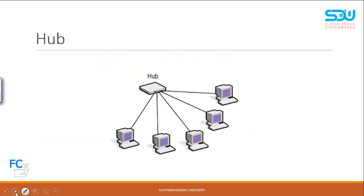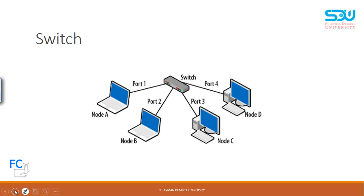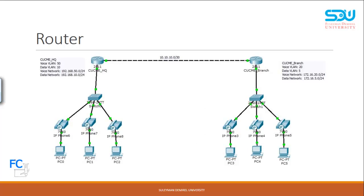This is the hub-based communication — the topology is looking like a star, a physical star topology. This is the switch communication. And also we have communication by using the router. The router is a layer 3 device — currently you don't know what layer 3 is, but in the future we'll have a detailed explanation. For now, it's enough to understand that the router is interconnecting networks, while switches and hubs are interconnecting end devices.